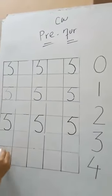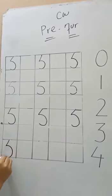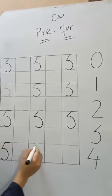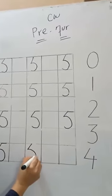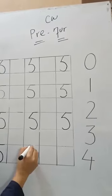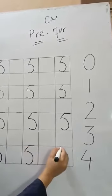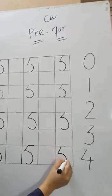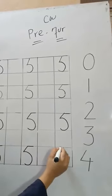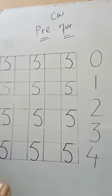5. Write with me. Writing should be proper. 5. Slanting line. Draw a curve and then slipping line. That make number 5.